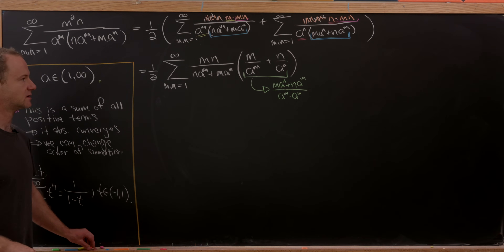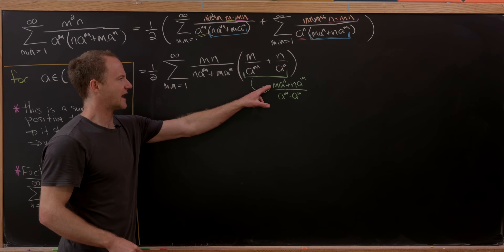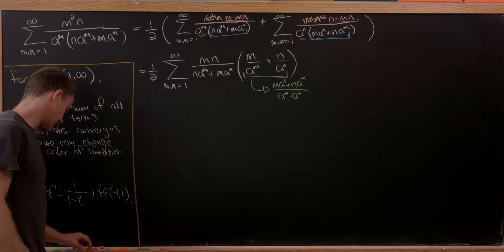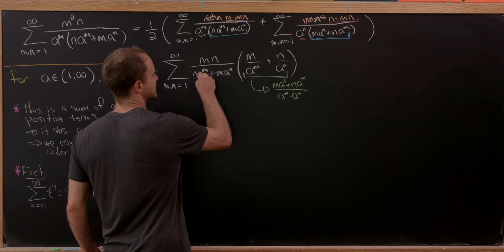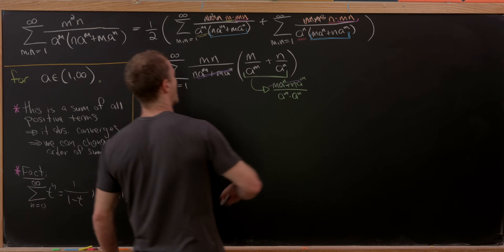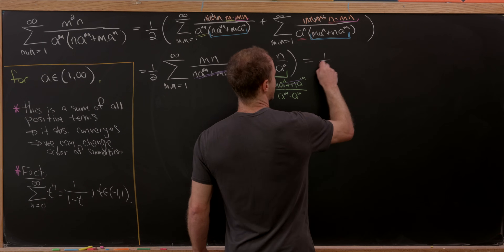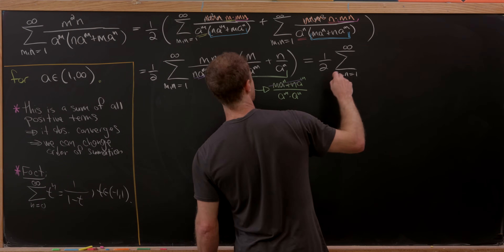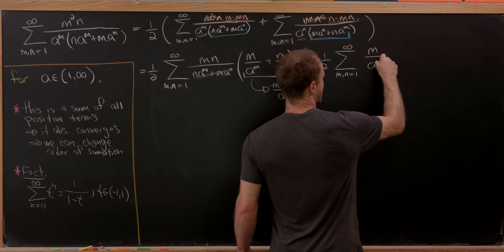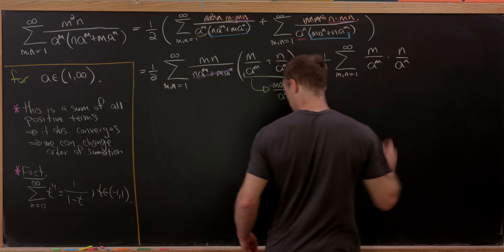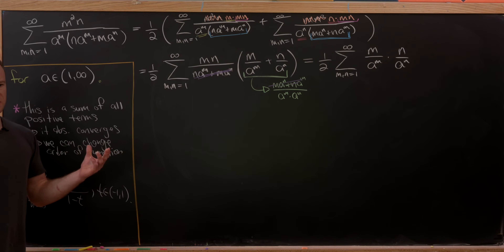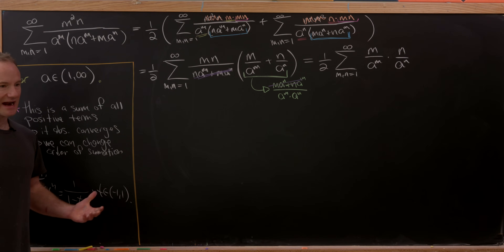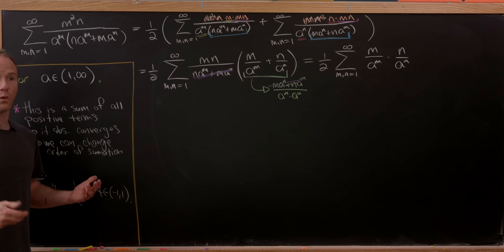Notice that the combined numerator m a to the n plus n a to the m appears in the denominator of the overall expression, so those factors cancel. We're left with one half times the sum as m and n go from 1 to infinity of m over a to the m times n over a to the n — a product of an m-term and an n-term, so the double sum factors into two separate sums.